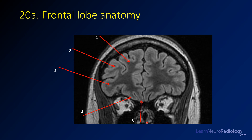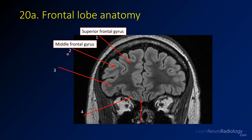These are the gyri of the frontal lobes. What you're looking at is a FLAIR image, a coronal image through the frontal lobe. Your first structure here is the superior frontal gyrus. And then as you move laterally, this one is the middle frontal gyrus.